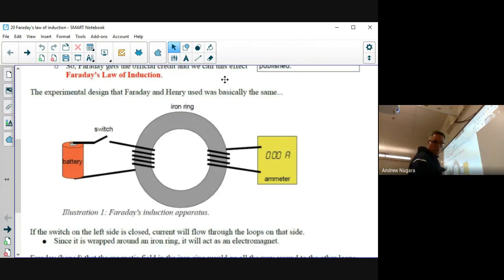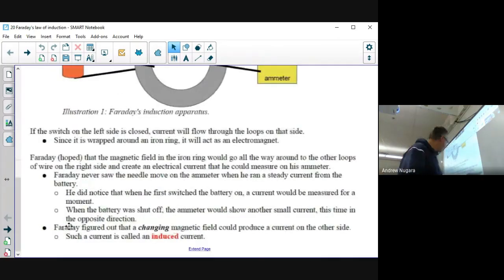But what they discovered was that the only time that they read an electric current here was when they opened and closed the switch. This is an important concept because what it demonstrates is that only a changing magnetic field could produce a current.